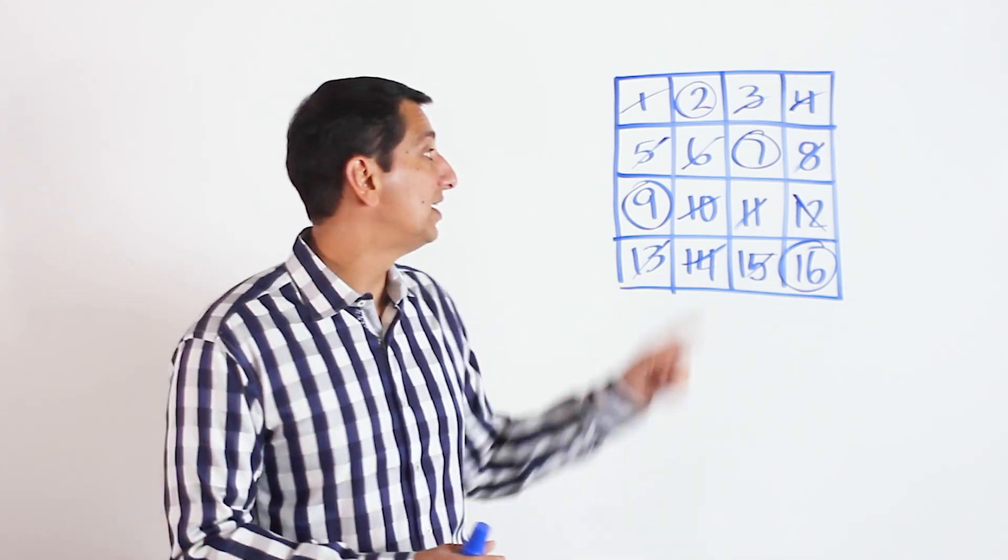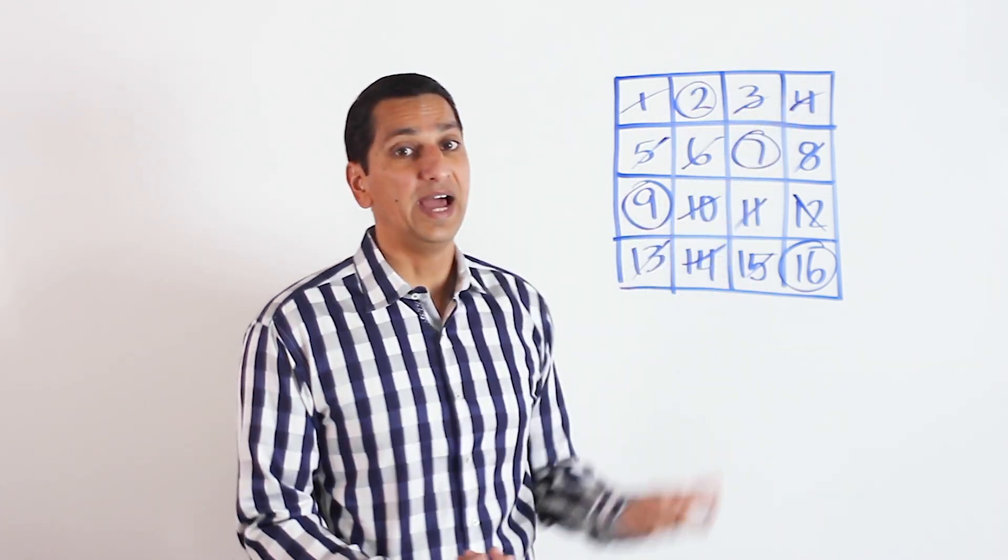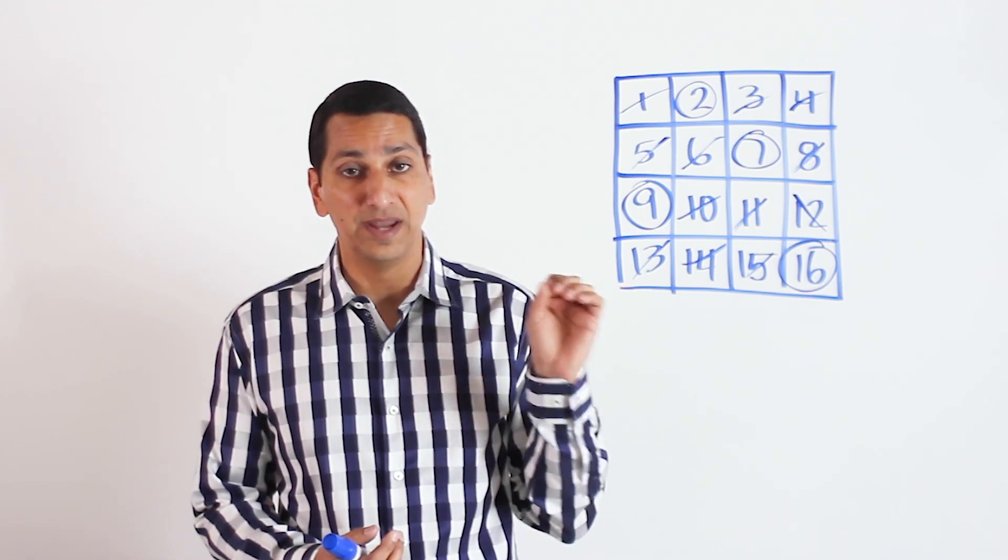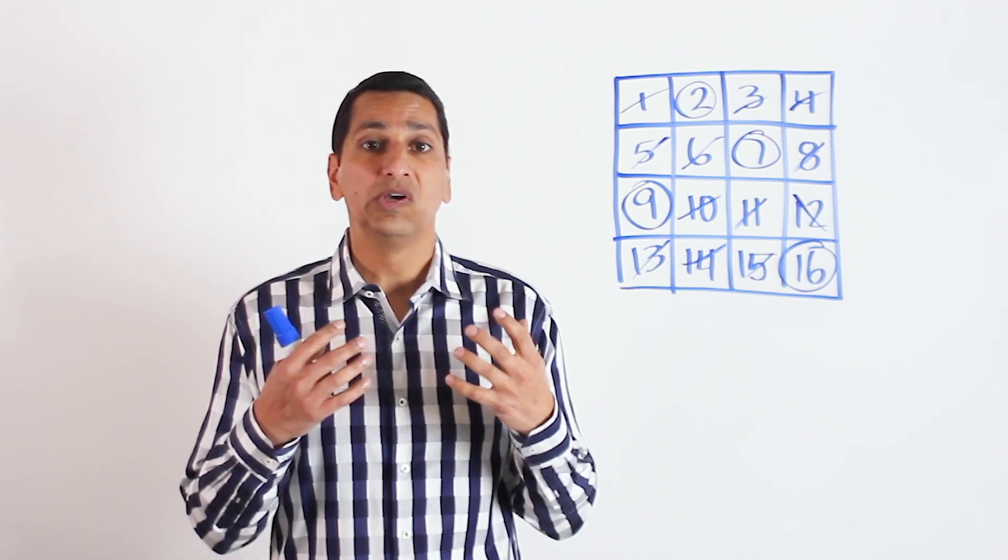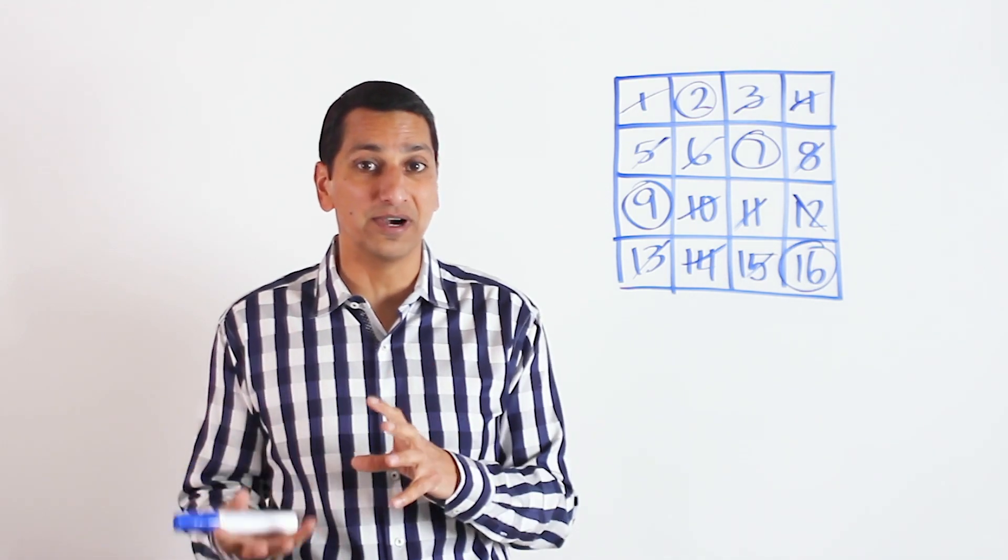Kids will often notice that the diagonal adds up to 34. It does. This other diagonal adds up to 34. Of course they do, because in each case, you have one number in each row in each column. But from there, they might be able to start figuring out why this thing works.